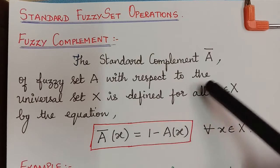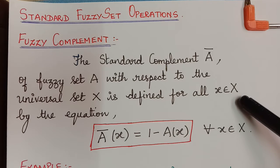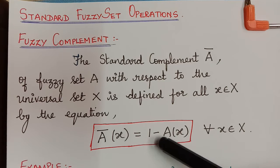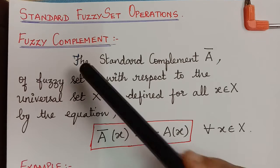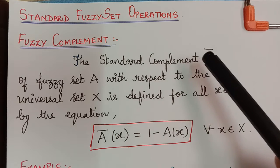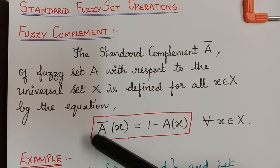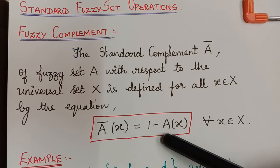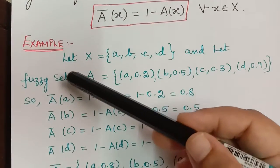The standard complement ā of a fuzzy set A with respect to the universal set X is defined for all x ∈ X by the equation: ā(x) = 1 − A(x) for all x ∈ X. That is, the membership grade of x in the set ā equals 1 minus the membership grade of x in the set A.